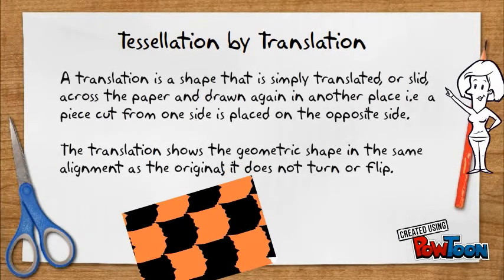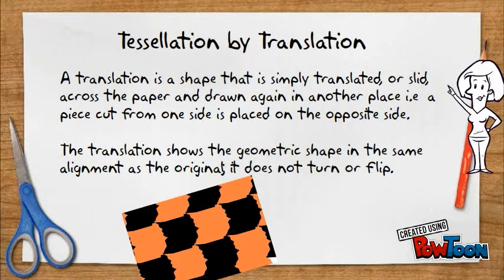Tessellation by Translation. A translation is a shape that is simply translated or slid across the paper and drawn again in another place.